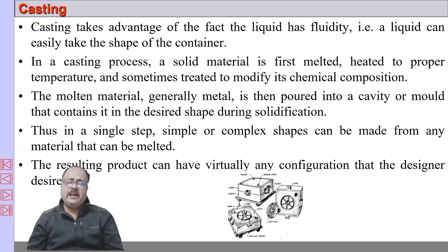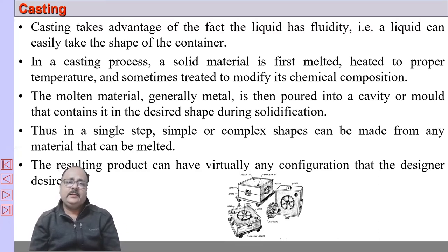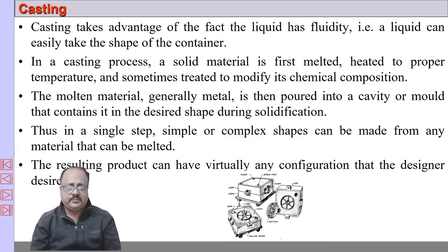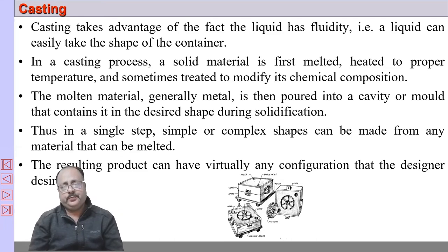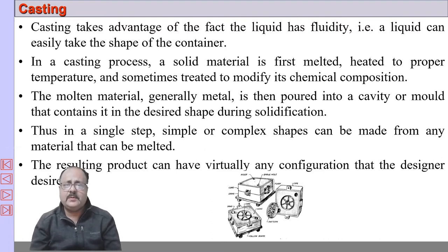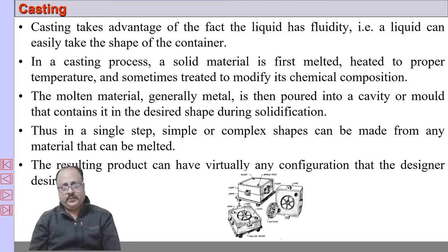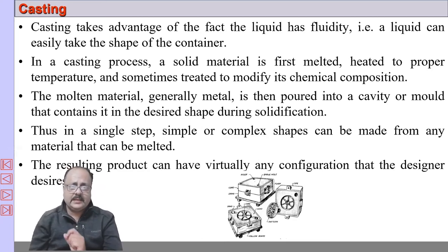In casting, you just pour the metal into the shaped cavity. In a single step, you generate a complex shape. The USP of casting process is that it can manufacture complex shapes. Therefore, it is important to know when to select the casting process. A particular product can be manufactured by machining, forming, or casting. The primary criteria for selecting casting is the complexity of the shape — if the shape is complex, it is better to go for casting.